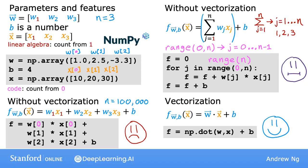The reason that the vectorized implementation is much faster is behind the scenes, the numpy.dot function is able to use parallel hardware in your computer. This is true whether you're running this on a normal computer—that is, on a normal computer CPU—or if you are using a GPU, a Graphics Processor Unit, that's often used to accelerate machine learning jobs. The ability of the numpy.dot function to use parallel hardware makes it much more efficient than the for loop or sequential calculation that we saw previously.